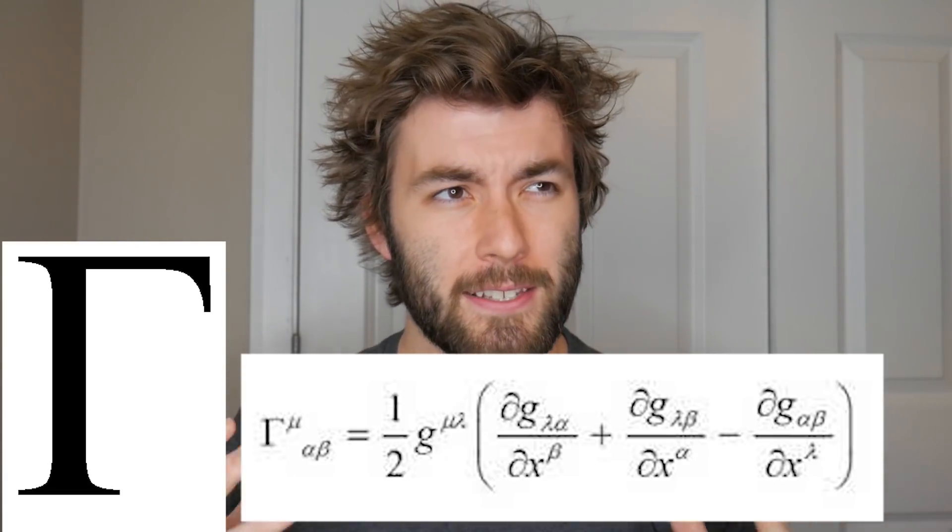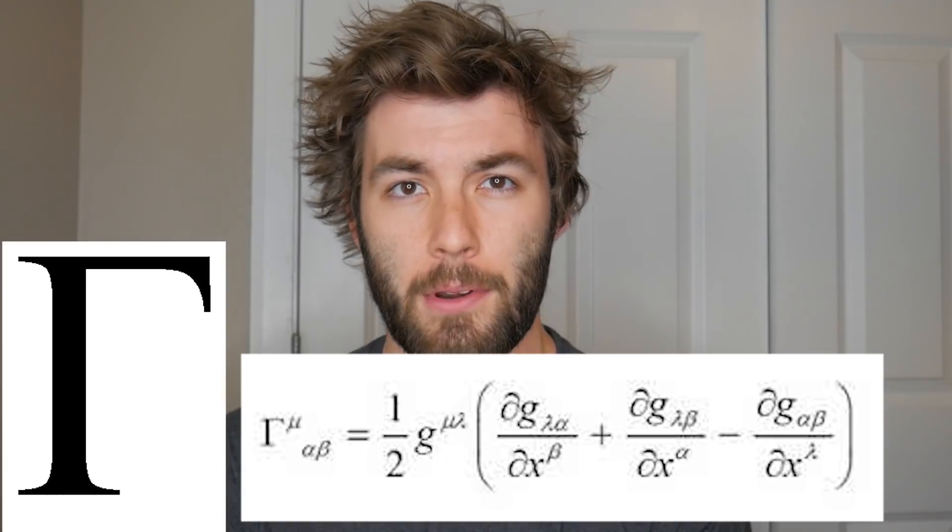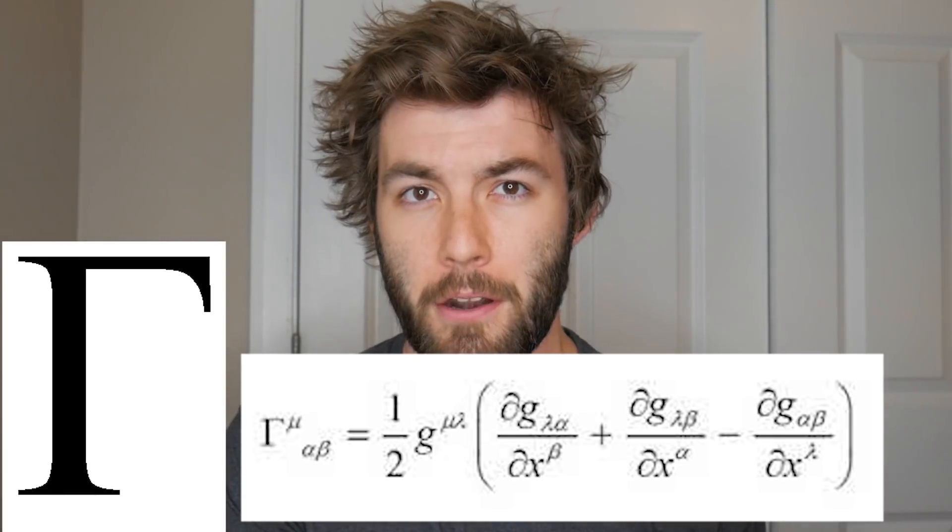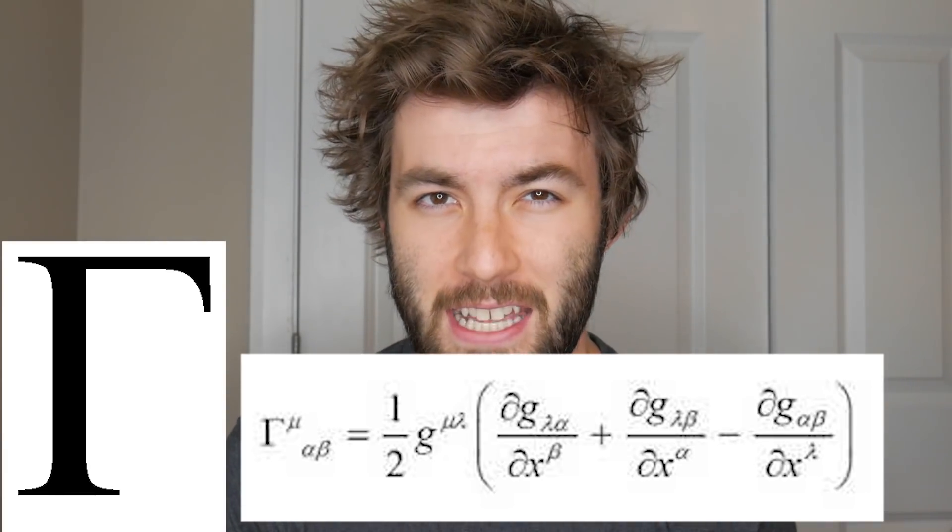Since we're on gamma, I might as well bring up capital gamma, which you might not encounter in undergraduate physics because it'll either be used to describe the gamma function — which generalizes factorials to the complex plane — or the Christoffel symbol, which is basically a correcting term to make sure that the covariant derivative is still a tensor.